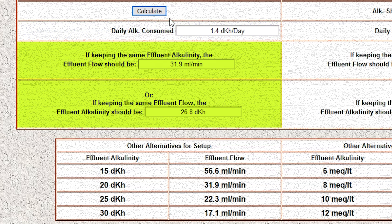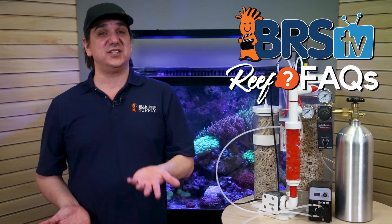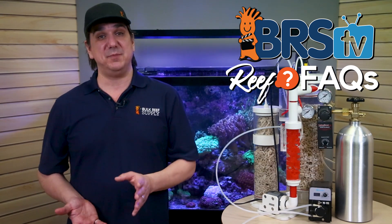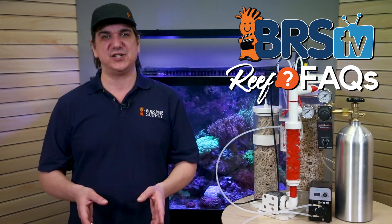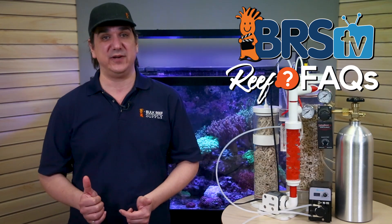Second, it gives you two options to achieve that. The first assumes you're going to maintain the strength of the calcium reactor's effluent at whatever it is — in our case 20 dKH. So with our example tank, to replace the 1.4 dKH daily we actually have to dose 31.9 milliliters per minute rather than the 20 milliliters per minute. So the only thing I really need to do is adjust a needle valve, or even better a dosing pump, to 32 milliliters per minute, and I should have nearly perfectly matched what I was doing with my two-part previously.